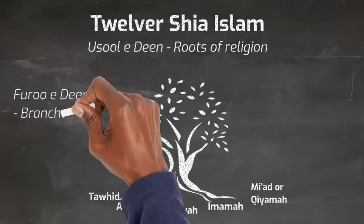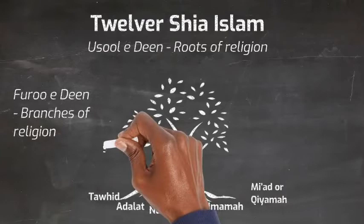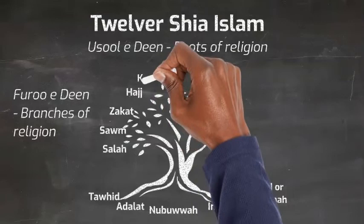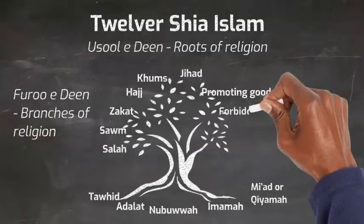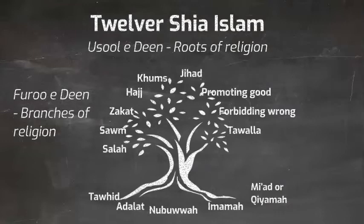Then they have the Furu-i-Din, or branches of religion, which are the actions that follow from the root beliefs. These include the familiar Salah, Saum, Zakat, and Hajj, and also include Khums, an annual tax of 20% of people's profits; Jihad, the Arabic word for struggle, meaning going through hardship for Allah; promoting good; forbidding wrong; Tawalla, expressing love towards good; and Tabara, expressing hatred towards evil. So while Zakat is always the act of charitable giving, it is not always considered by Muslims to be a pillar of Islam.